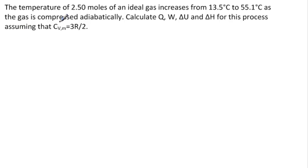The problem reads: the temperature of 2.5 moles of an ideal gas increases from 13.5 degrees Celsius to 55 degrees Celsius as the gas is compressed adiabatically. Calculate Q, W, delta U, and delta H for this process assuming that the specific volumetric heat is 3R over 2. Okay.